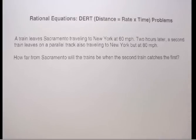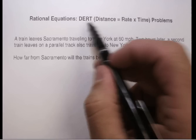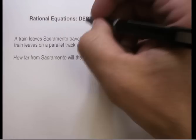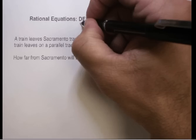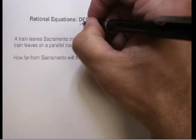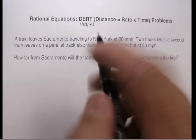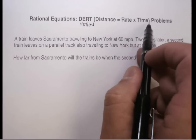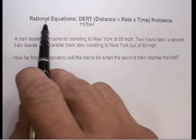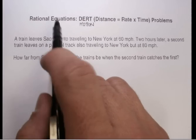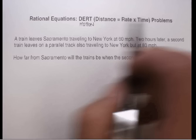In this video I'm going to show you how to use rational equations to solve what I call dirt problems — or another way you'll see them listed in books is motion problems. Basically it's just distance equals rate times time, and you can use rational equations and all the logic that you use with those to solve these problems.